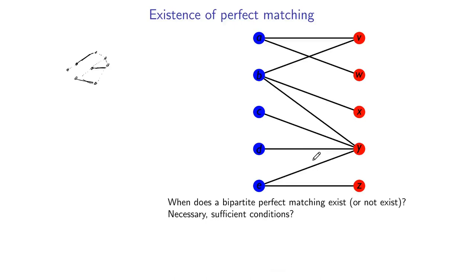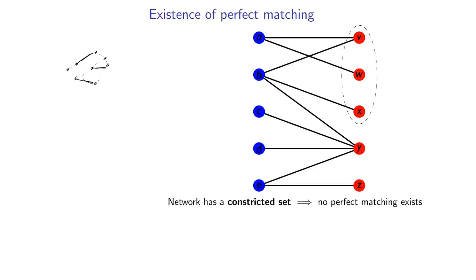Let's first ask about perfect matchings — when can you find one? How do we know one exists? Let's try and find necessary or sufficient conditions for the question: does a perfect matching exist in this network? Looking at an example, I know for sure there is not a perfect matching in this network, and I can demonstrate this because these three vertices — v, w, and x — are special. They form what is called a constricted set.